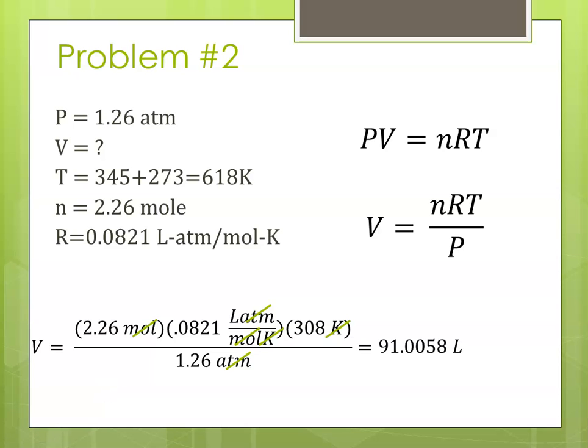And plug it into our calculator, we get 91.0058. It looks like we need 3 sig figs. Our third significant digit is the 0, so we're going to round that to 91.0 liters. So our volume in this case is 91.0 liters.